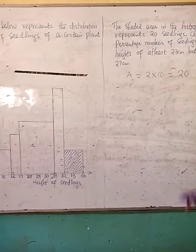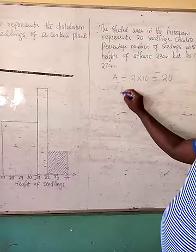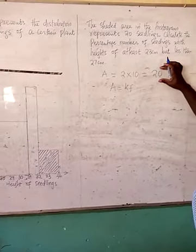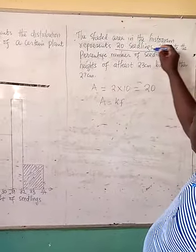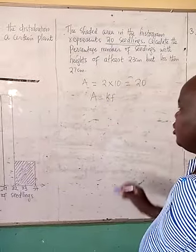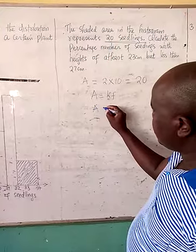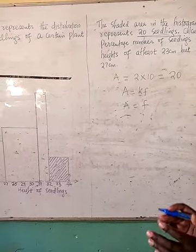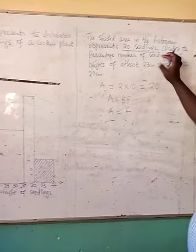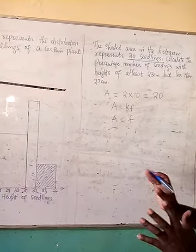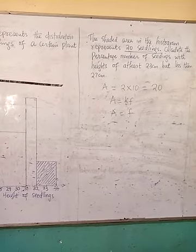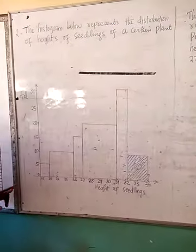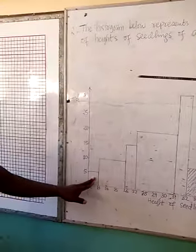The area equals 20, as we have been told. You remember the relationship: area is equal to a constant times frequency. When you look at the area and realize it equals the number of seedlings — meaning it equals the frequency — then the constant must be 1. So we can conclude for this particular case that area is equal to frequency, meaning that for every bar, its area equals the frequency for that class.